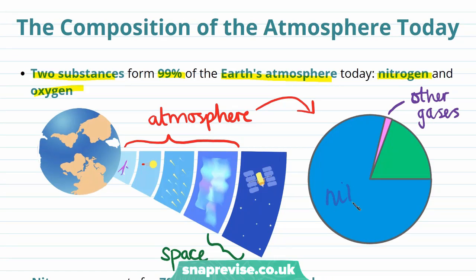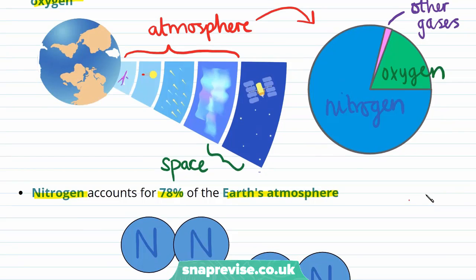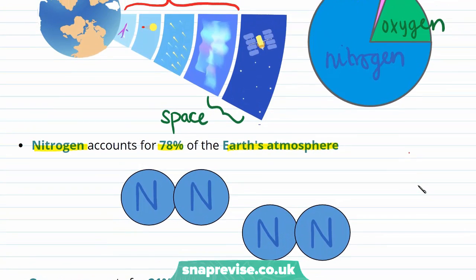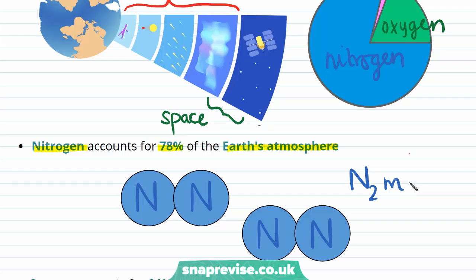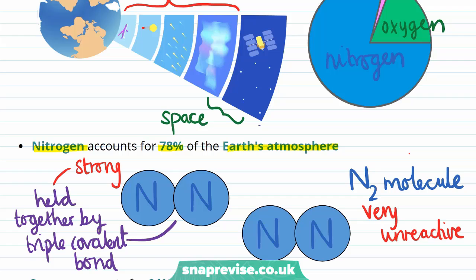The largest proportion of the Earth's atmosphere is nitrogen. Specifically, nitrogen accounts for 78% of the Earth's atmosphere, and as always for nitrogen this exists as the diatomic N2 molecule. These N2 molecules are held together by a strong triple covalent bond, which makes the N2 molecule very unreactive. This is why this gas can take up such a large proportion of the atmosphere — because it doesn't react with any other substances found there.